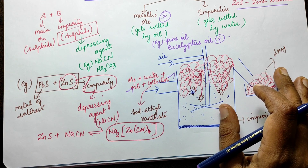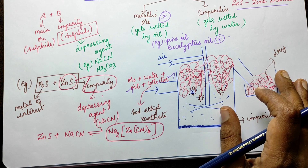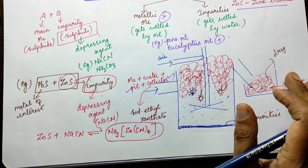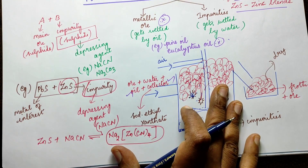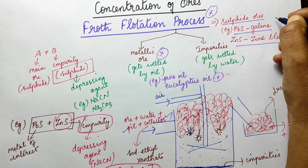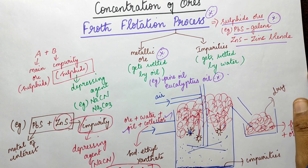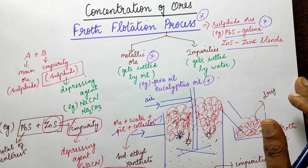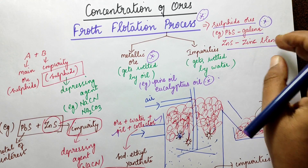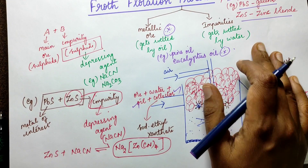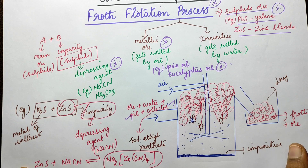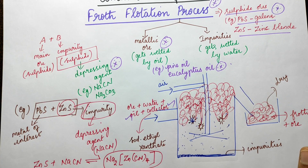Important questions: If the ore contains two types of sulphide, out of which one is an impurity, how will you remove the impurity and concentrate the ore? What type of method is used to concentrate sulphide ore? For which type of ore is froth flotation process used — give an example. The depressing agent question is also very important. If you found this video useful, please like, comment, share and subscribe to the channel.